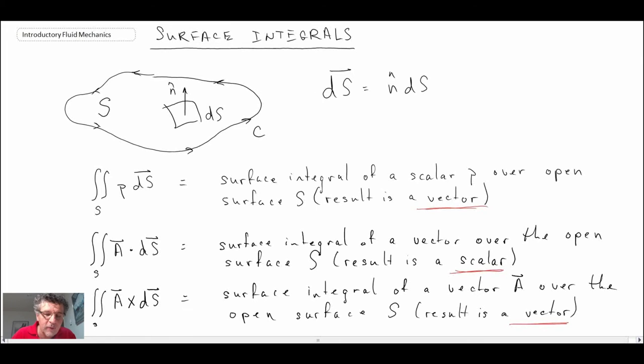Now if it turns out that we have a closed surface, so what would be a closed surface? Maybe you're integrating among or across all of the surfaces of a cube, for example. And so if you wanted to integrate over all of those surfaces, that would be the case where we have what we call a closed surface integral. And so let's take a look at that.